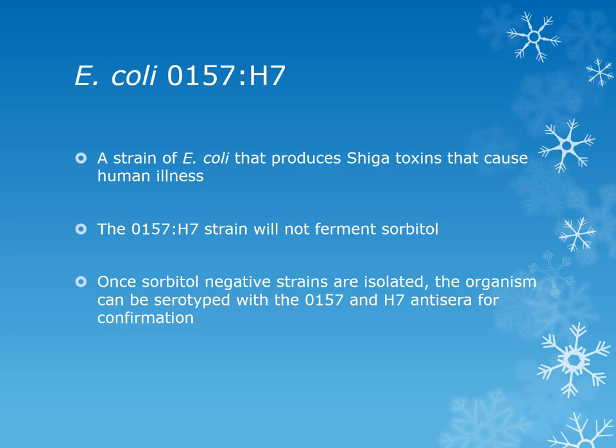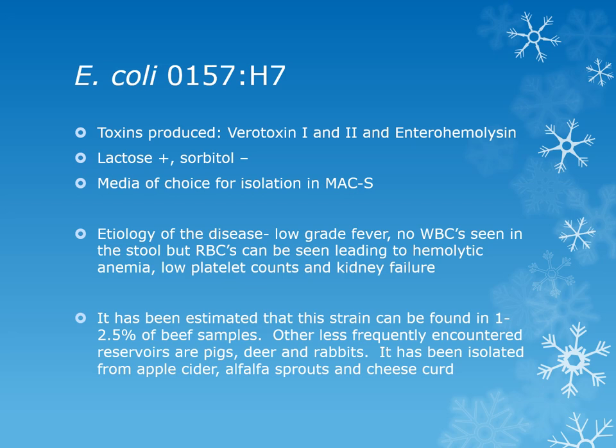The most clinically significant E. coli strain is O157:H7, an enterohemorrhagic strain that produces Shiga toxins. The O157:H7 strain will not ferment sorbitol, so it is colorless on MAC with sorbitol. Once we isolate a sorbitol-negative E. coli, we must serotype it with O157 and H7 anti-sera using an agglutination test to confirm the strain. The media of choice for isolation is MAC sorbitol.